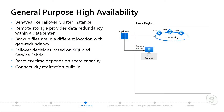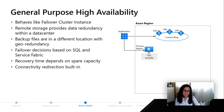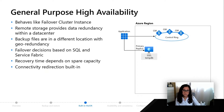The first service tier we're going to talk about is general purpose. What you're seeing here is an application, some gateways and a control ring, and a primary replica. In our connectivity architecture, we talked about how you can set up redirect or proxy. In the redirect situation, you go to the gateway and then straight to the database. In the proxy situation, you always go to the gateway. That's going to remain the same across all of these service tiers.